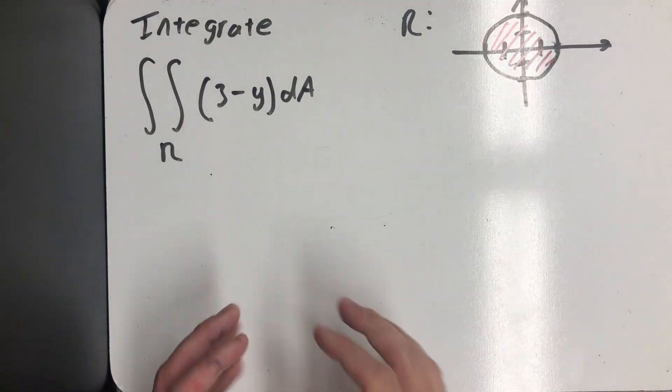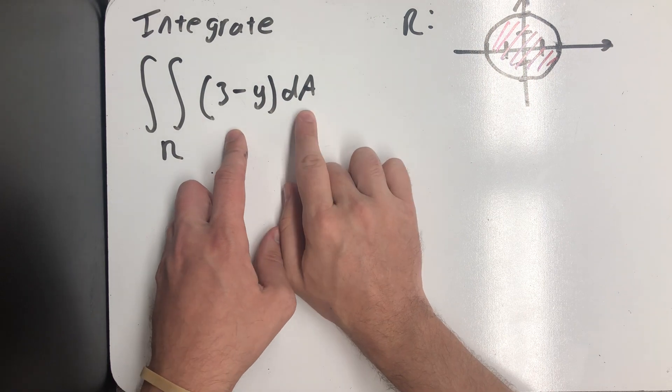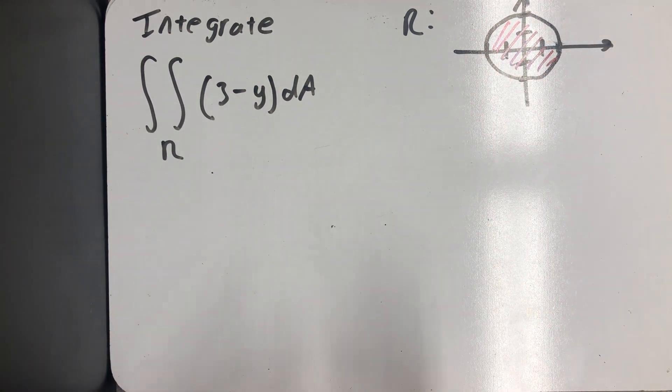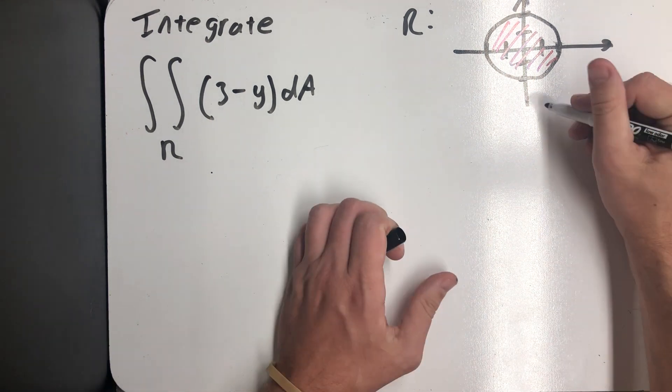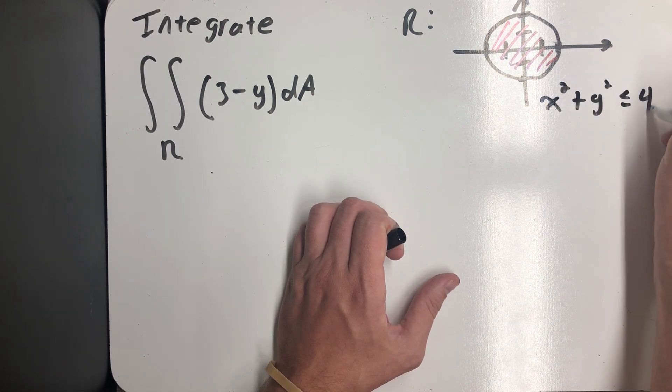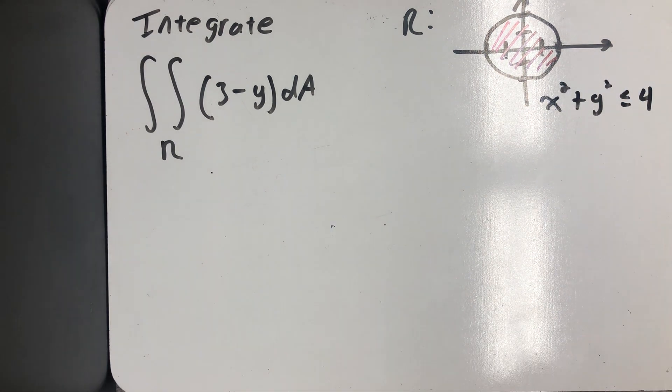We are asked to integrate 3 minus y dA over the region R, where R is all the points on the interior of the circle x squared plus y squared is 4. So one way to write that down is the circle centered at the origin with a radius of 2.